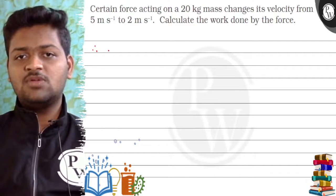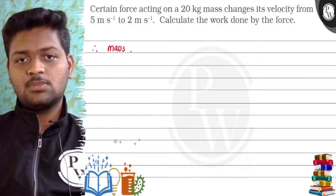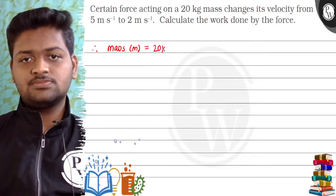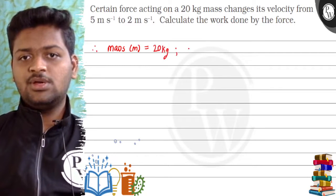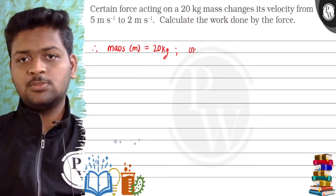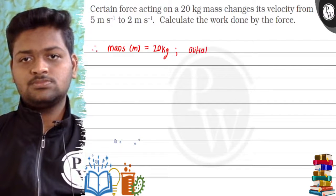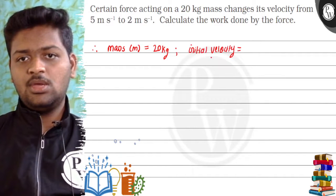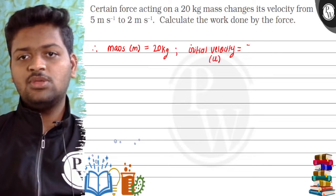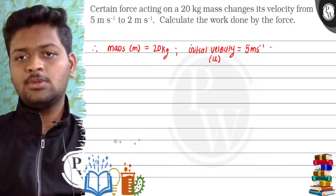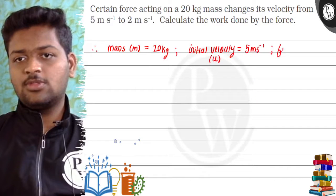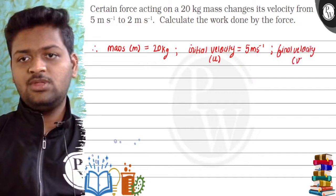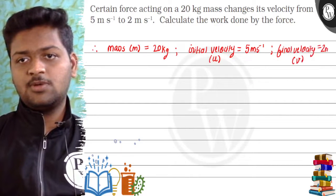First of all, we will write what is given. Mass m is equal to 20 kg. Then initial velocity u is 5 meters per second, and final velocity v is 2 meters per second.